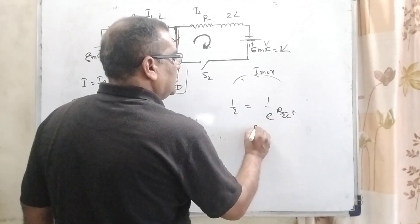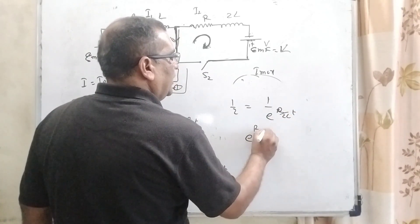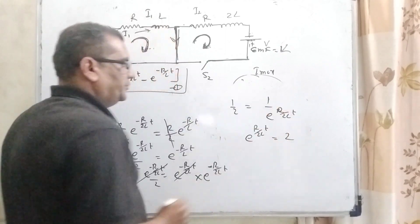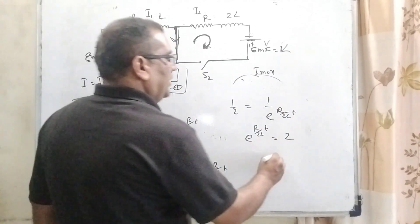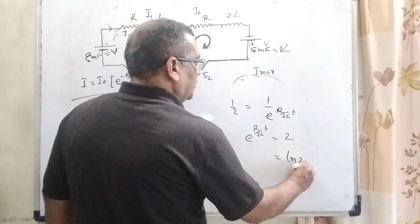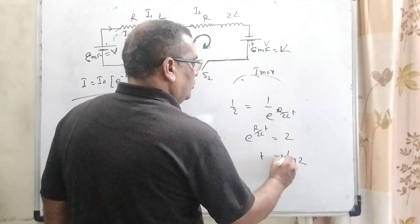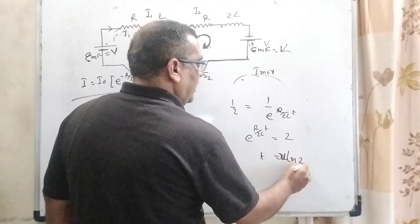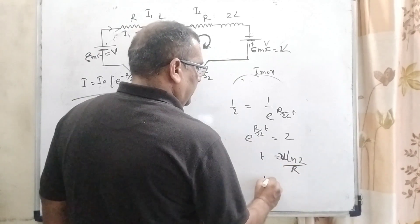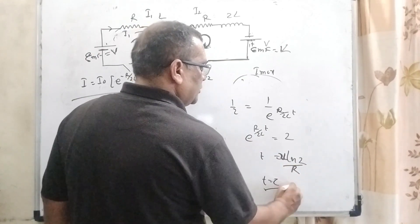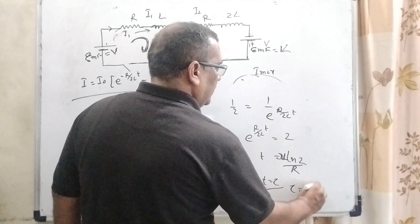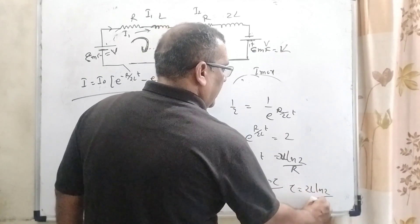E raised to power R by 2L T equal to 2. It can be written as ln 2 and T equal to 2L by R. And here T equal to tau in that condition. So tau equal to 2L ln 2 by R. Here option D is correct.